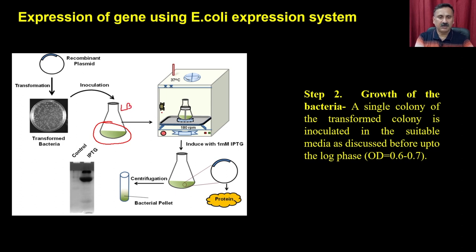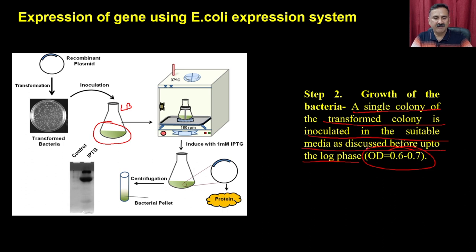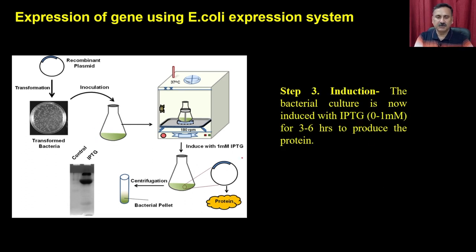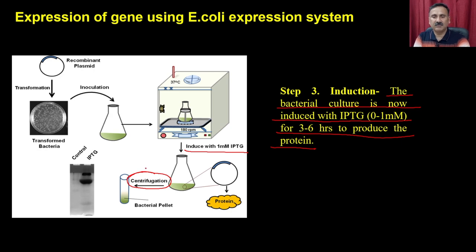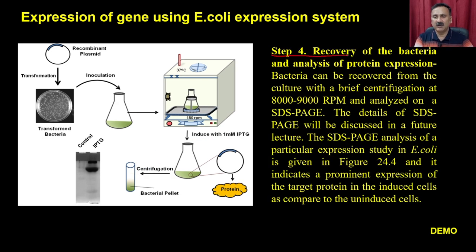In step 2 you inoculate a single colony into suitable bacterial media such as LB media and allow it to grow in a 37°C incubator. The single colony is allowed to grow up to the log phase such as OD of 0.6 to 0.7. In step 3 you induce the bacterial species with an inducer such as IPTG for three to six hours to produce the proteins. In step 4 you recover the bacteria and analyze the protein expression — bacteria can be recovered by centrifugation at 8000 to 9000 rpm and analyzed by SDS-PAGE.